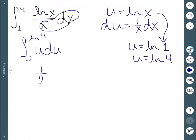Once we integrate this, we have 1 half u squared, running from 0 to ln of 4. And when we substitute that in, we get 1 half times ln of 4 squared.